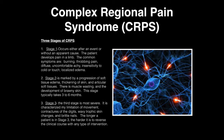Stage 3 is the most important stage and is the most severe. It is characterized by limitation of movement, contraction of the digits, waxing, and trophic skin changes, and brittle nails. The longer a patient remains in stage 3, the harder it is to reverse the clinical course with any type of intervention.